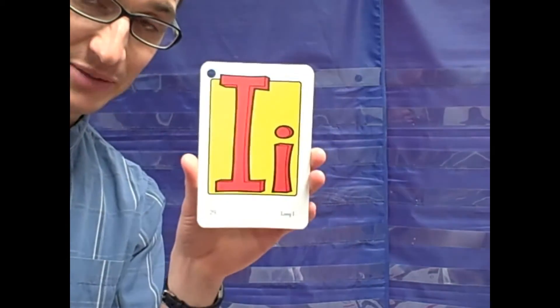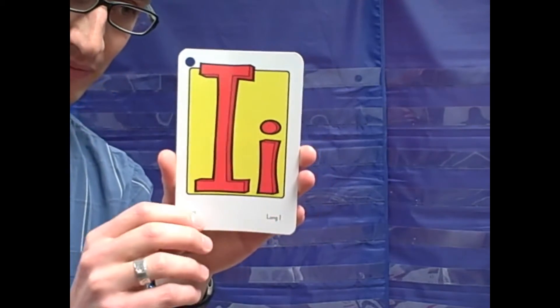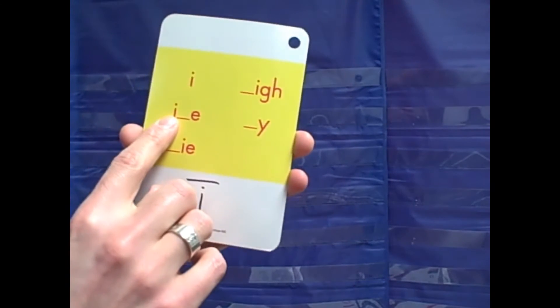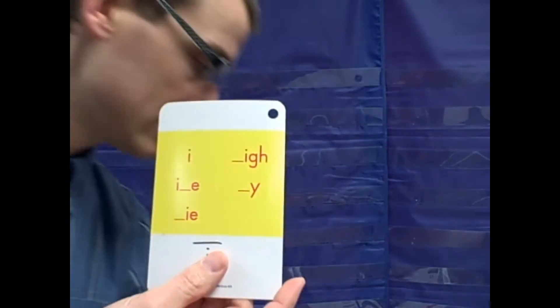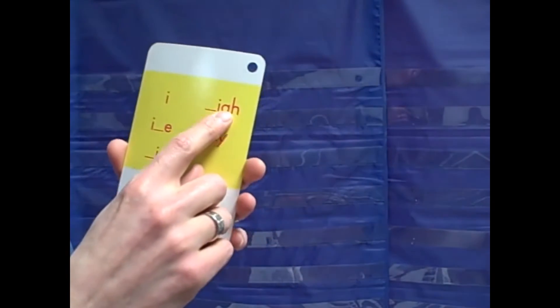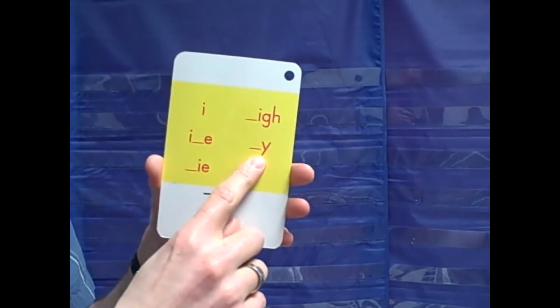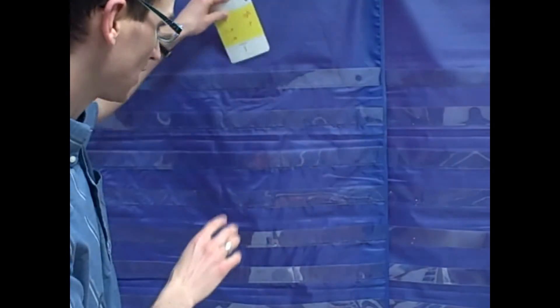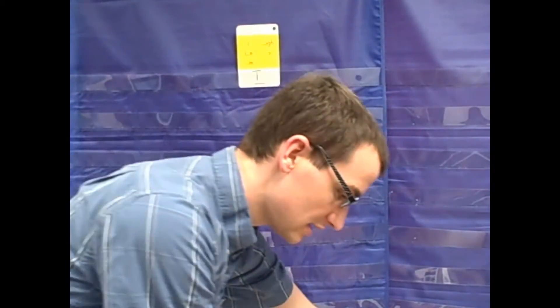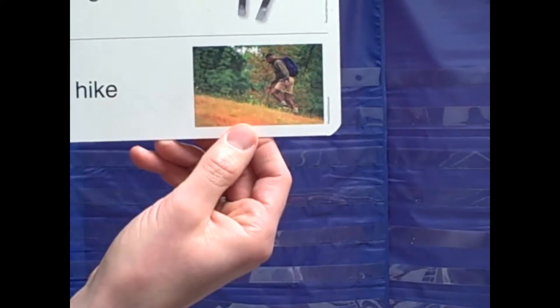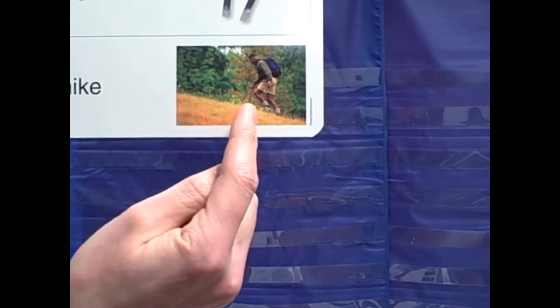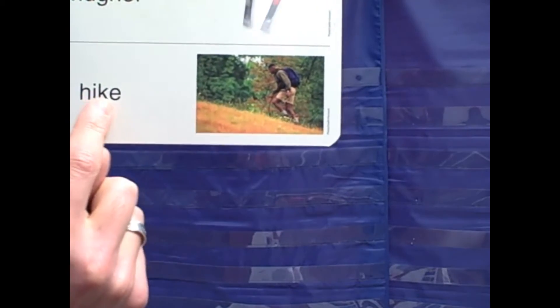Next, we'll practice spellings for long I. The first spelling pattern that we'll practice is I consonant E. Then we will practice I, G, H, and then we'll practice Y. The picture for I consonant E is this, hike. This person likes to hike. I consonant E.